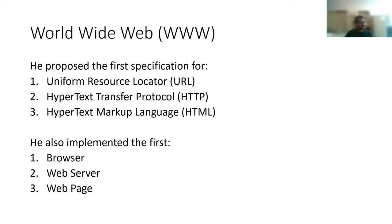Tim Berners-Lee also implemented the first browser. Browsers can be text-based or graphical; now most are graphical. The browser — like Google Chrome, Safari, Microsoft Edge, or Mozilla Firefox — is the software you use for browsing web pages. The web server is a computer somewhere else that holds a copy of the webpage. Everyone accesses the server for its resources, and the server — a very powerful computer — handles many requests from the internet to provide information.